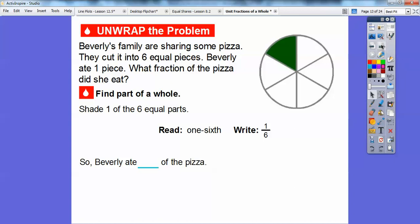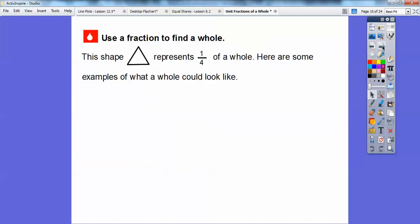So, Beverly ate 1 sixth of the pizza right there. She ate 1 of the 6 equal pieces. And see how they're all equal right here? She ate 1 of the 6.